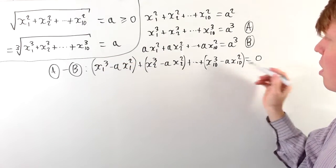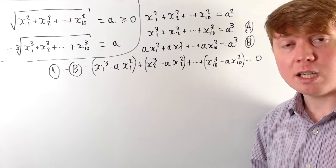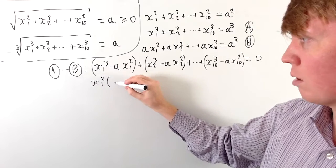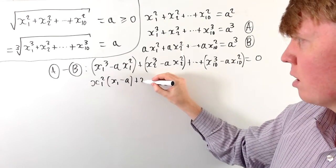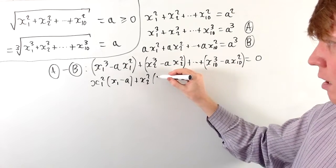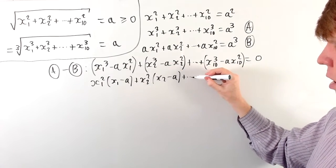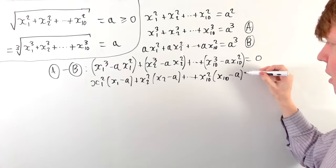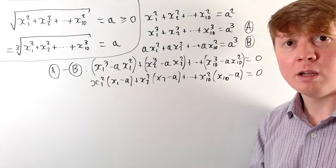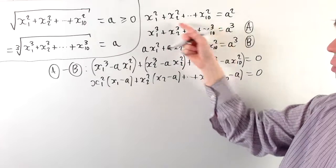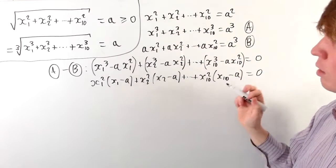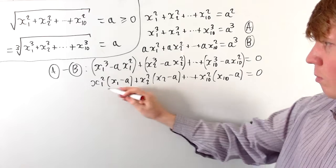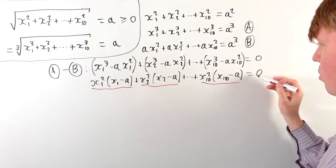Grouping each pair of terms in brackets — x1 terms, x2 terms, up to x10 terms — we can factor out xi squared from each bracket. So we get x1 squared times (x1 minus a), plus x2 squared times (x2 minus a), and so on up to x10 squared times (x10 minus a), all equal to zero.